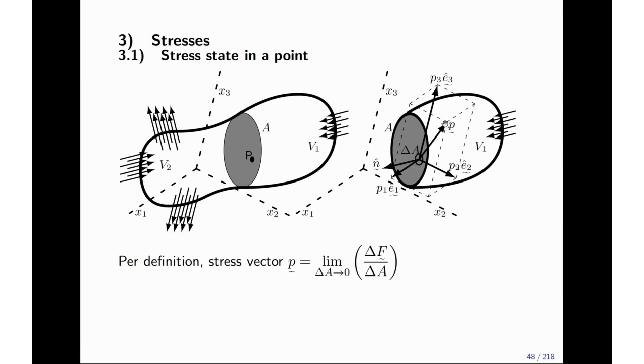However, the stress vector P can be decomposed into a normal component, P1, which is pointing in the one direction, it can be decomposed into P2, which is parallel to the two direction of the coordinate system, and direction three, which is parallel to the three direction of the coordinate system. So, this is how we have a vector decomposed into three components, and likewise, later I will show you how to decompose it in the normal and the tangential directions.